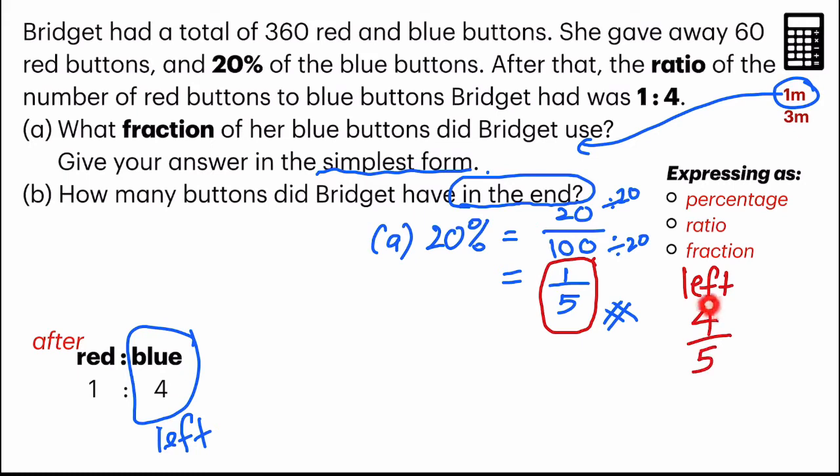So you take a look at these 4 units. It's reflected right here in the ratio. So what does it tell me about the total units for blue buttons? It is actually 5.